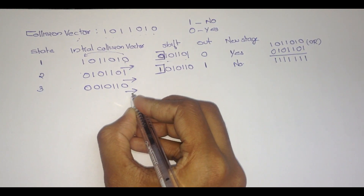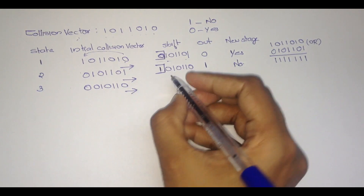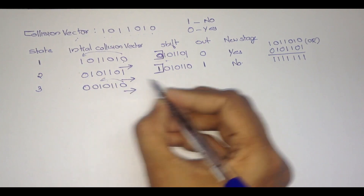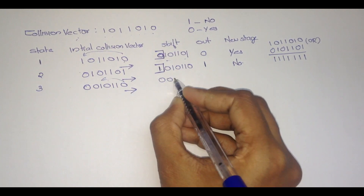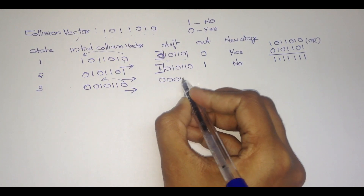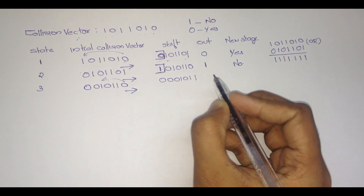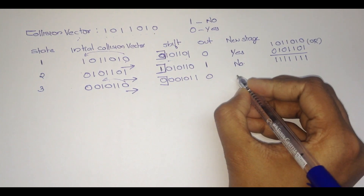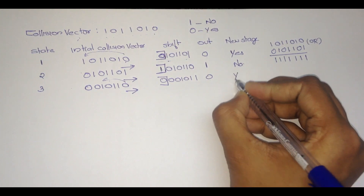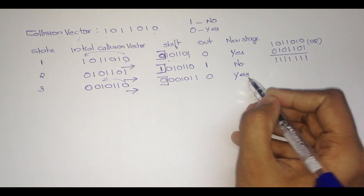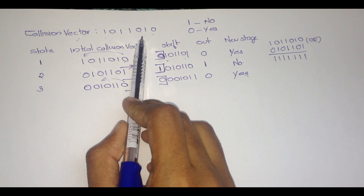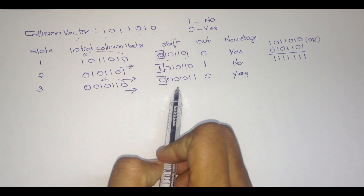Now we have to perform right shift operation. Here 0 will become at first. Therefore the result is: 0, 0, 0, 1, 0, 1, 1. We have to out this first value. Here 0 is out. Therefore a new state occurs. Whenever a new state occurs, we have to perform an OR operation with the shifted value.